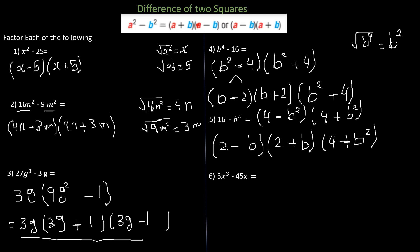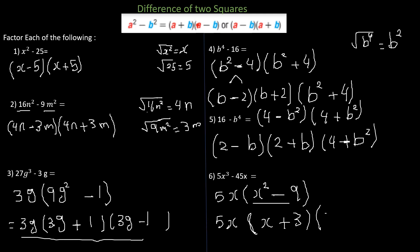For the last example, 5x cubed minus 45x, we check for a greatest common factor. The GCF of 5 and 45 is 5, and the common variable factor is x, so the GCF is 5x. Factoring out: 5x cubed ÷ 5x equals x squared, and 45x ÷ 5x equals 9. So we have 5x times x squared minus 9. This is a difference of two squares: x squared minus 9 factors as x plus 3 times x minus 3, giving the final answer 5x times x plus 3 times x minus 3.